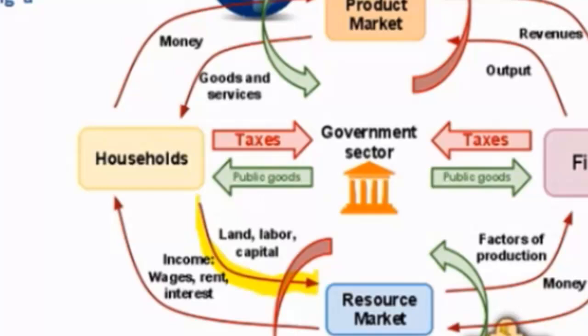In exchange for the provision of these productive resources, households receive income in the form of wages, interest, and rent.